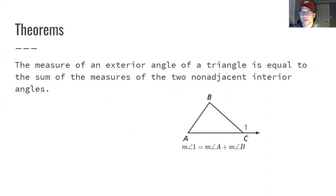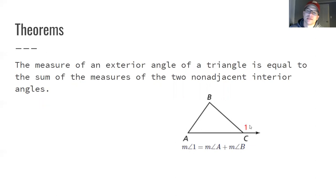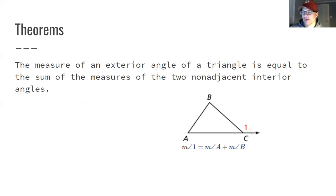For exterior angles: the measure of an exterior angle equals the sum of the two non-adjacent interior angles. In a diagram, angle 1 is adjacent to angle C. The two angles it is not touching are A and B. A plus B equals angle 1, because angle C plus angle 1 equals 180, meaning angle 1 equals the sum of the other two.